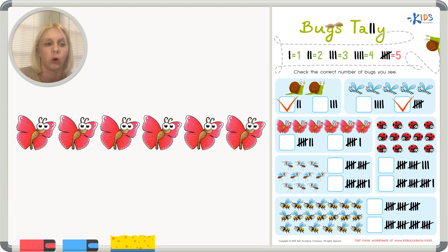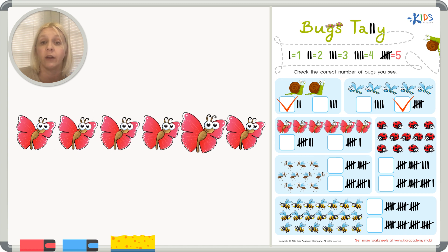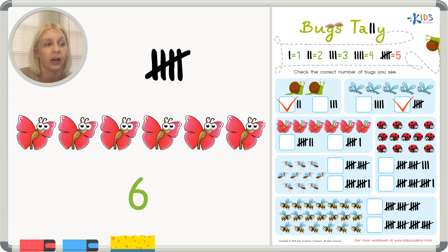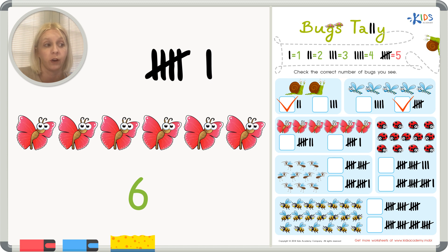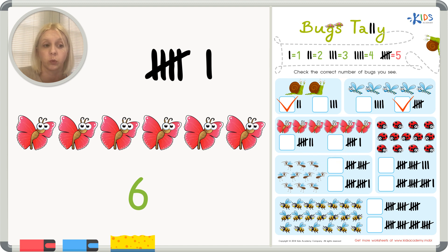Now we've got some bigger numbers. Let's count the next one: one, two, three, four, five, six butterflies. What I need is a five plus one more. So I've got five, six. Let's see if we see that — we've got five, six, seven or five, six. It's six, so we put a check right here for six butterflies.